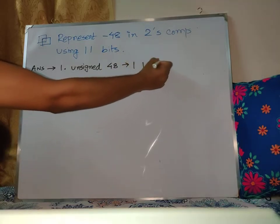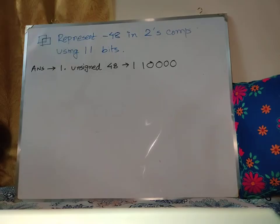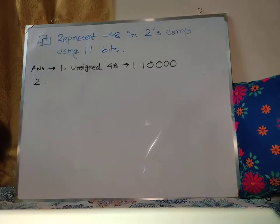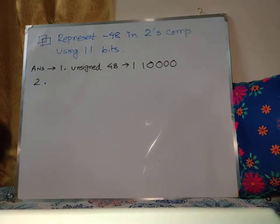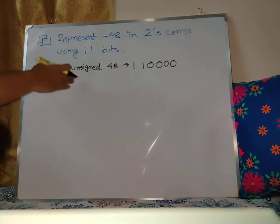So the second step is the sign and magnitude system. For positive numbers, we use the unsigned binary representation.